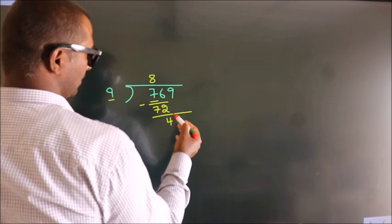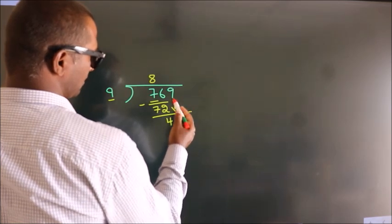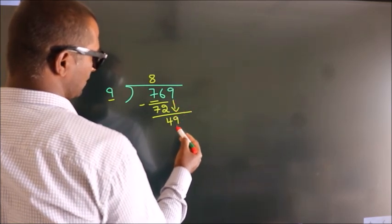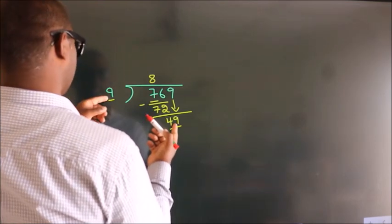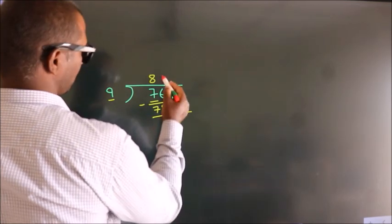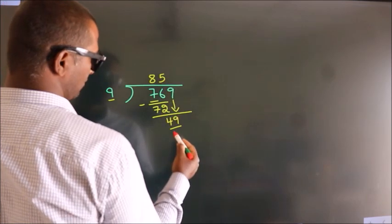After this, bring down the beside number, so 9 down, making it 49. A number close to 49 in the 9 table is 9 times 5, which is 45.